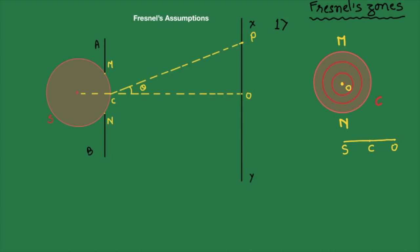So the effect at any point P will depend upon the combined effect of all these zones. How many zones will come in a particular wavefront will depend upon the distance of the screen and also the wavelength of light.